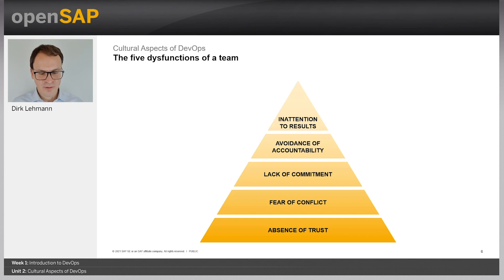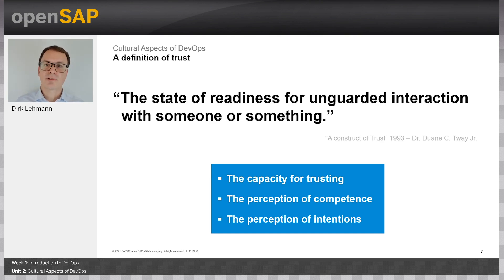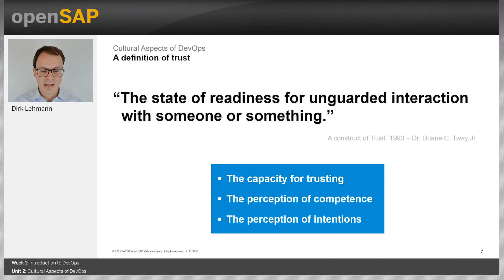Trust is important for healthy teams so that everyone's voice is heard and incorporated. But what is trust? There are a lot of great definitions and I want to introduce you to one by Dr. Tway Jr. In the paper 'A Construct of Trust,' trust is defined as the state of readiness for an unguarded interaction with someone or something. I think this is a nice one-sentence definition. It also shows that you can feel trust not only toward a person, but toward something like a system or a process.